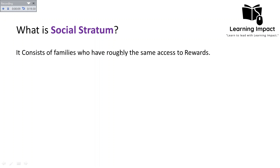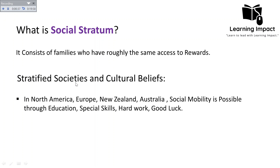A social stratum consists of families who have roughly the same access to rewards. A stratum is a category in which people are assigned to a particular rank or group — all individuals in a similar stratum have the same access to rewards. In stratified societies, social mobility is possible through education, special skills, hard work, and good luck — particularly in North America, Europe, New Zealand, and other developed countries. People can move up and down within the social stratification depending on the cultural beliefs of the society.